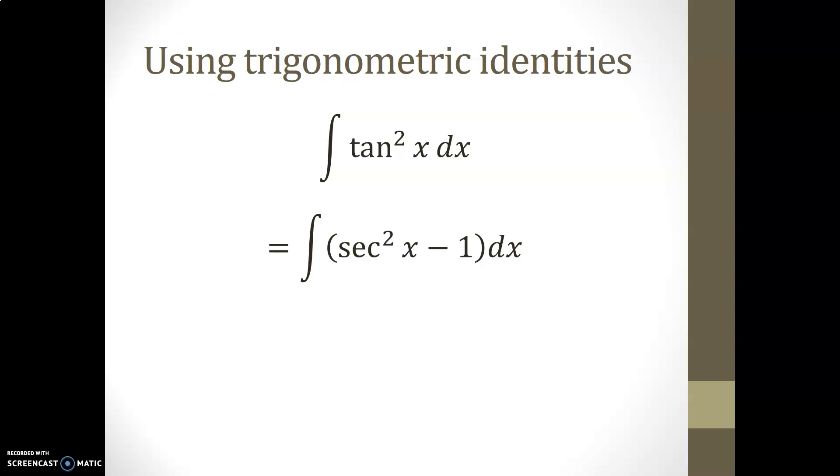Then secant square x and 1 are themselves basic forms. The antiderivative of secant square x is tan of x, and the antiderivative of 1 is simply x. Once again, with an added arbitrary constant.